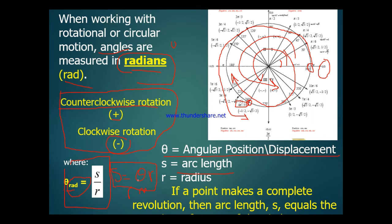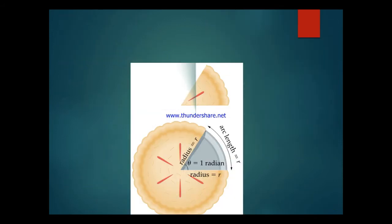Arc length equals angular displacement times radius: s = θr. If a point makes a complete revolution, it moves 360 degrees, which in angular displacement is 2π. So the arc length becomes 2πr, which we define as the circumference of the circle. For a complete revolution, the arc length equals the circumference 2πr.